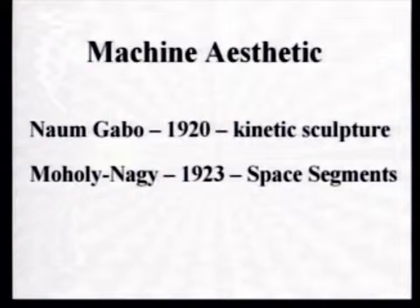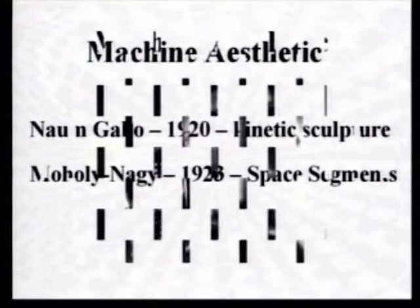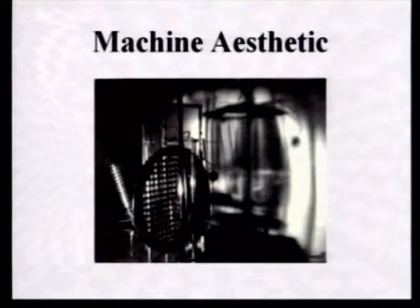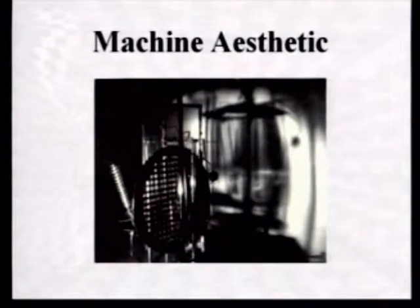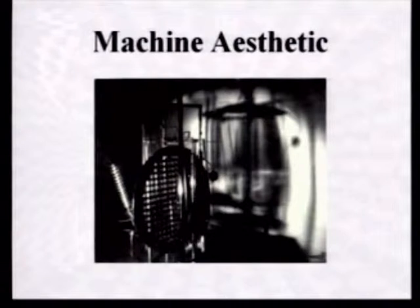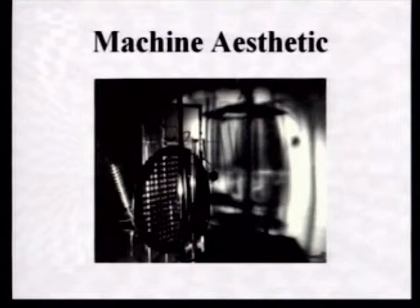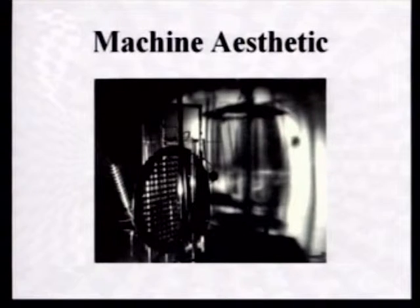Moholy-Nagy was experimenting with his space segments in 1923, but what he's really known for is his light machine — he called it something else, but translated it's a light machine. This mechanized sculpture has light incorporated into it, but the machine was the focus of the art form and light was only part of that focus — it wasn't the main focus.